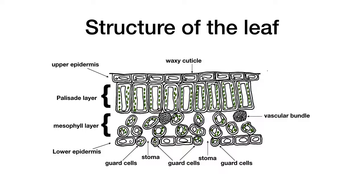Below the cuticle is the upper epidermis. This layer has a structural role for the leaf and is also transparent, allowing light to penetrate the leaf down to the lower layers.